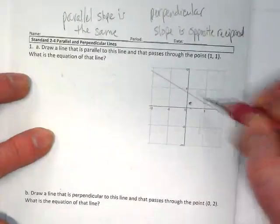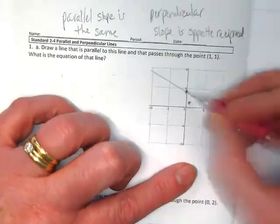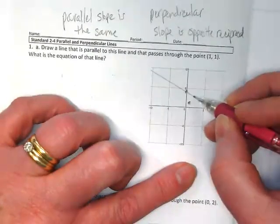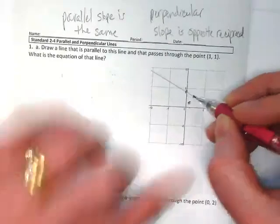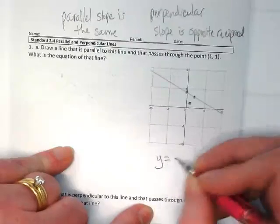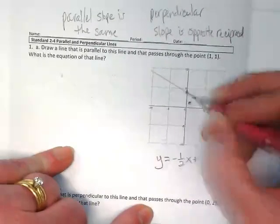And what I want to do is find out what the slope of the original line is. And it looks like it is negative 1 over 2. So the original equation is negative 1 over 2x plus 4.